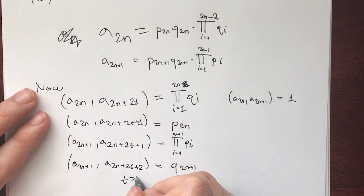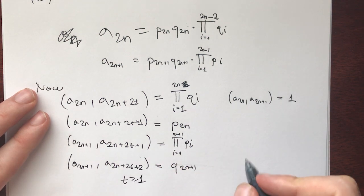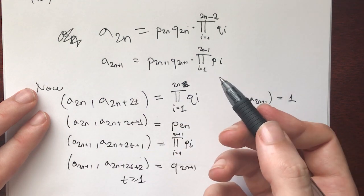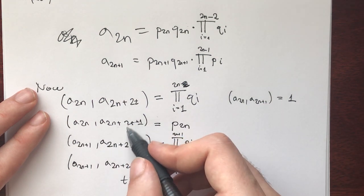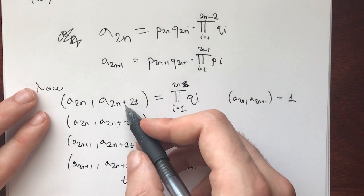This is for t greater than or equal to 1, and everything is good. Everything is rock and roll and good. In every single one of these cases, t greater than or equal to 1, and we are done.